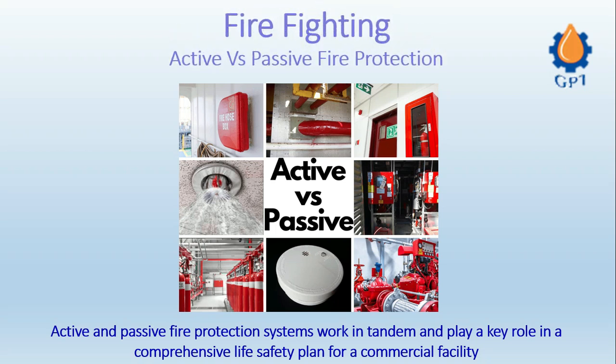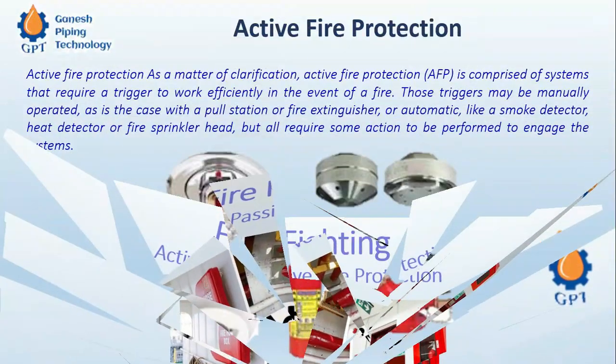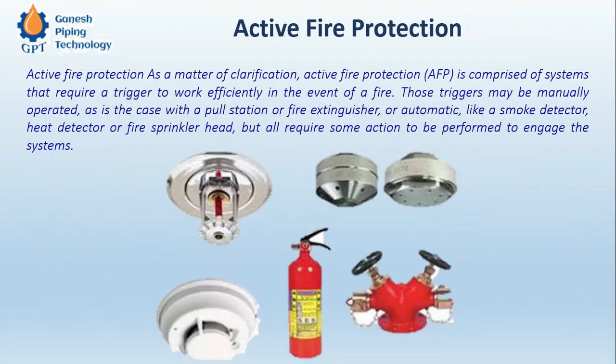Active fire protection is a device or system which is incorporated into the plant and protects the property from fire directly. Passive fire protection, by contrast, does not directly extinguish fire but works to limit its spread.